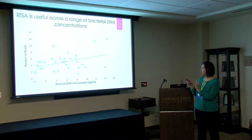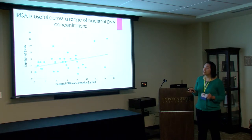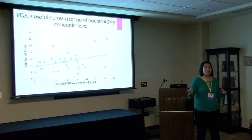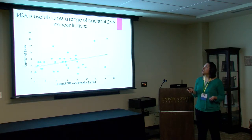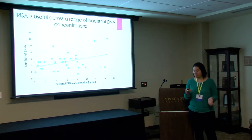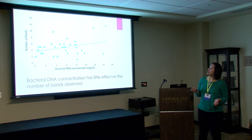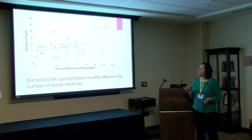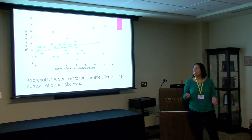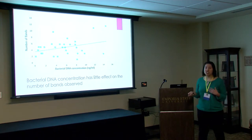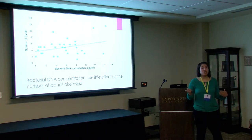Bacterial DNA concentration varied from 0.6 nanograms per milliliter to almost 15 nanograms per milliliter — a great range — but we were still able to use it for the assay. We can say that RISA is useful across this range of bacterial DNA concentrations. When comparing the number of bands with bacterial DNA concentration, we found a weak correlation, which tells us that the bacterial DNA concentration has little effect on the number of bands obtained. So that was not the reason why we obtained more bands in one group versus another.